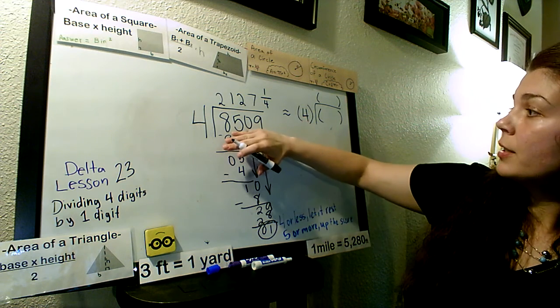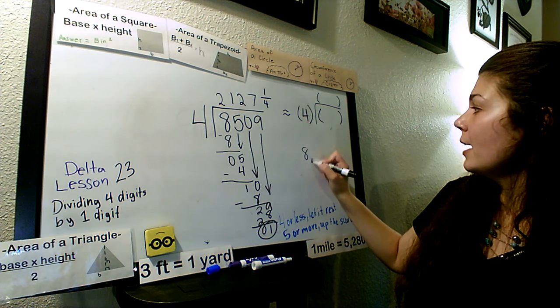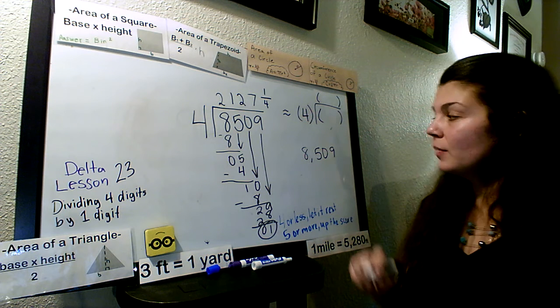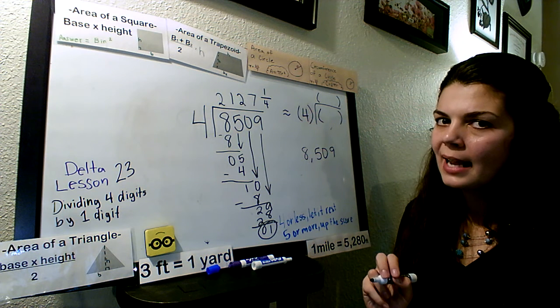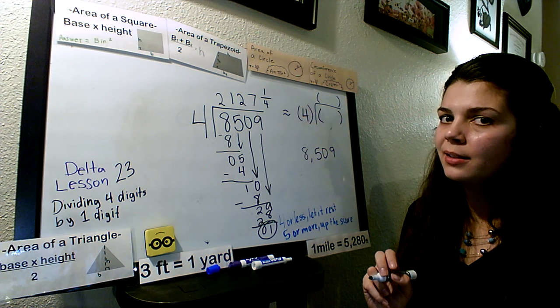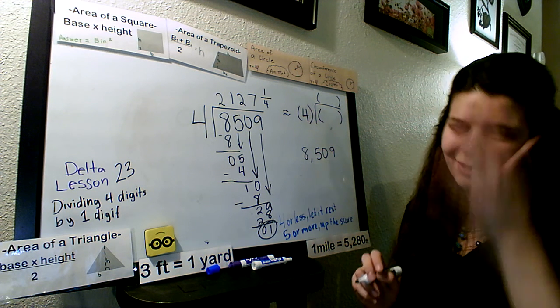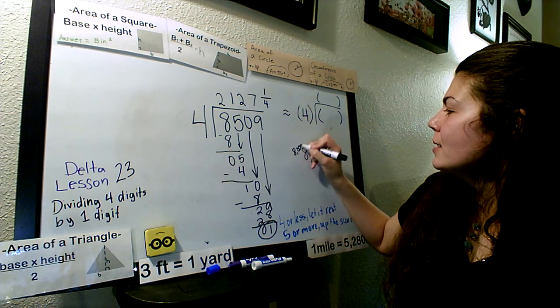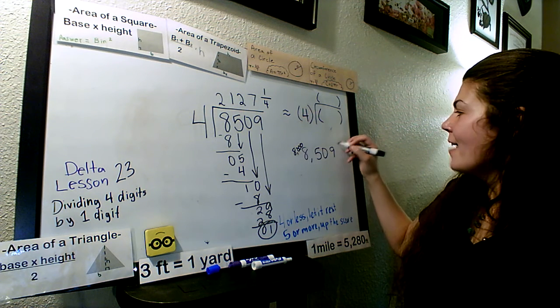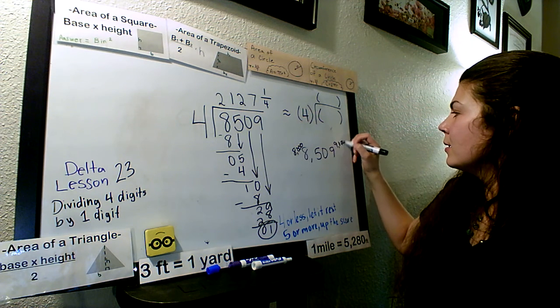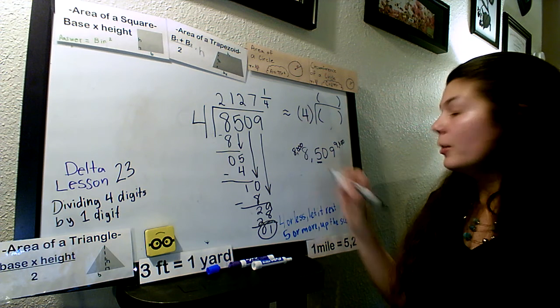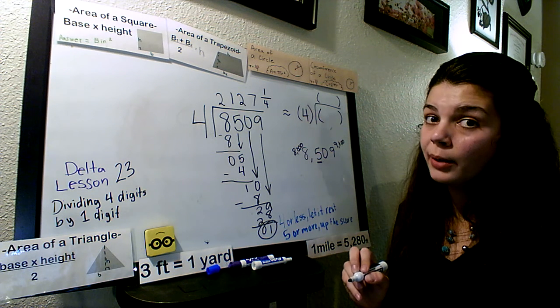Alright. So here's our divided number. 8,509. What two numbers is 8,509 divided by? Not rounded to. It's in between 8,000 and 9,000. We just go 1,000 up. Okay. Let's look at our second number here, which tells us which number we're going to be at.